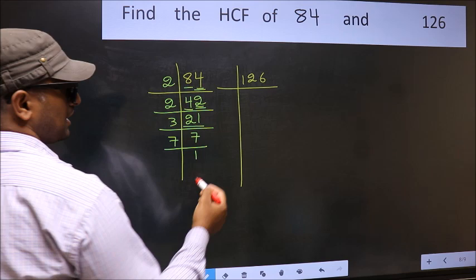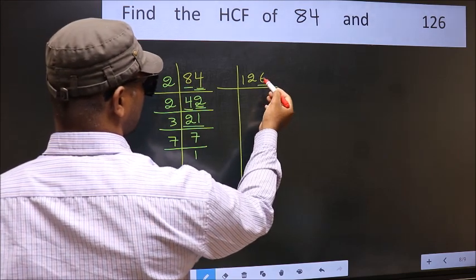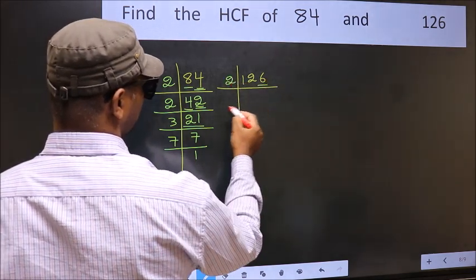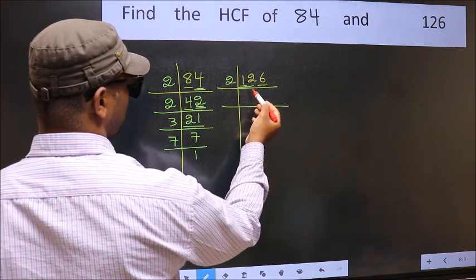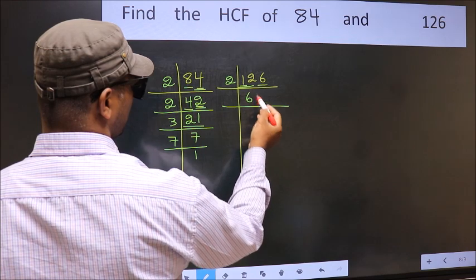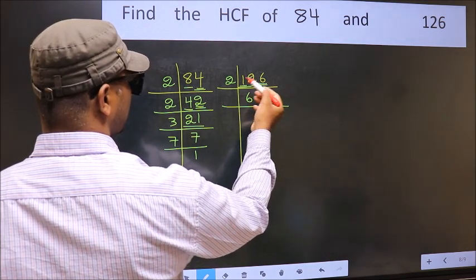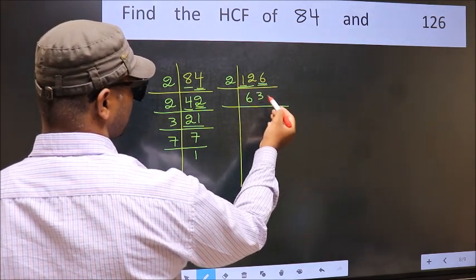Now the other number. Last digit 6 is even, so take 2. First number 1, smaller than 2, so combine numbers 12. When do we get 12 in 2 table? 2 sixes are 12. The other number 6, when do we get 6 in 2 table? 2 threes are 6.